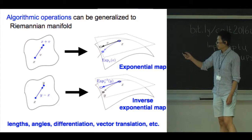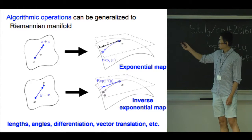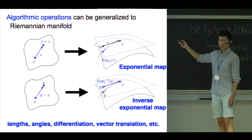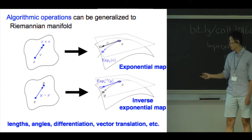But instead of adding the vector v to a vector x, we take the exponential map to map the vector v in x tangent space to another point on the manifold.